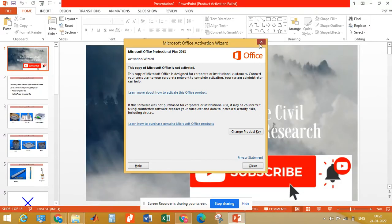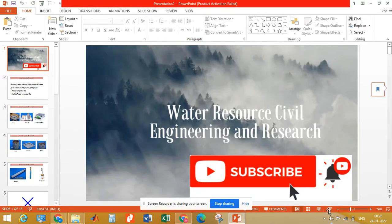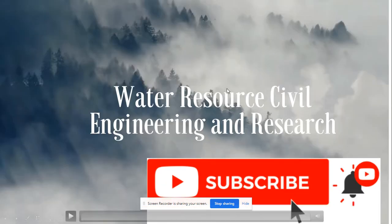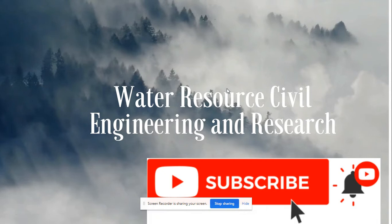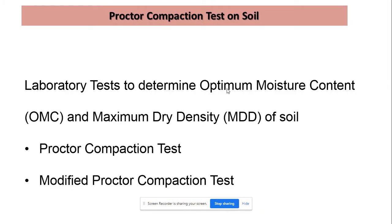In this video we will be discussing the Proctor compaction test, its uses, and how we can perform the compaction test on soil. In the laboratory we can perform the standard Proctor compaction test and the modified Proctor compaction test. These tests help to determine the optimum moisture content of soil and the maximum dry density of soil, which are very important from the point of view of field applications related to soil mechanics.